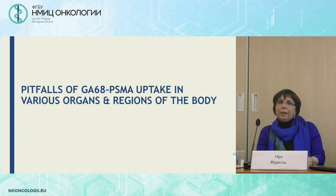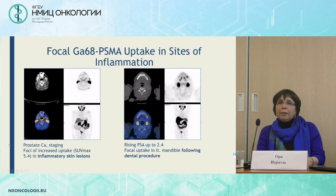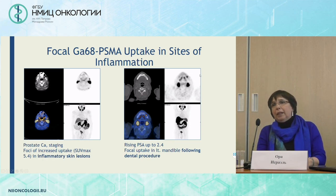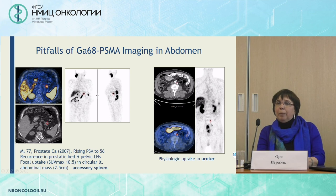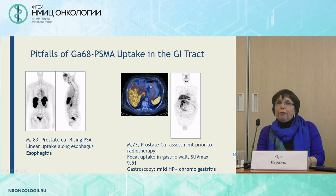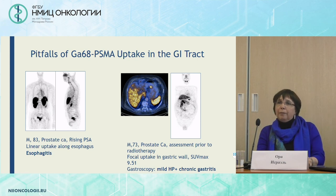A few more pitfall samples in various organs. When looking at the skull and head-and-neck area, we can see uptake in inflammatory skin lesions, uptake in an inflammatory process following a dental procedure, and uptake in accessory spleen. There is also a case with uptake in a peristaltic region in the ureter, uptake along the esophagus as in esophagitis, and focal uptake in chronic gastritis — very dangerous to report.